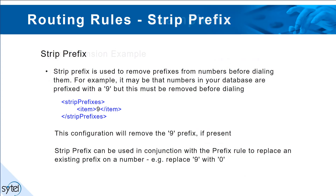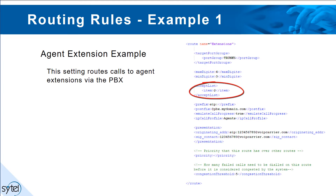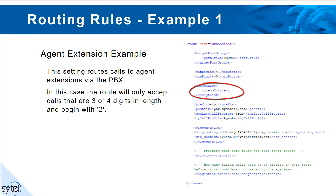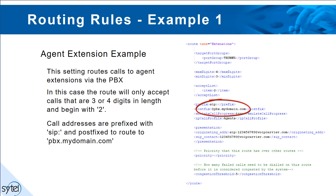Example 1: this setting routes calls to agent extensions via the PBX. In this case the route will only accept calls that are 3 to 4 digits in length and begin with a 2. Call addresses are prefixed with SIP and are postfixed to domain pbx.mydomain.com.